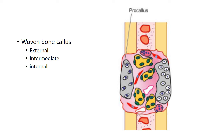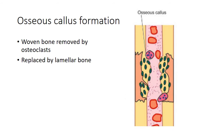This woven bone callus is arbitrarily divided into external, intermediate, and internal procallus. Next comes the stage of osseous callus formation. In this stage, the woven bone already formed is removed by incoming osteoclasts, and in that place proper lamellar bone is formed by osteoblasts invading the area.